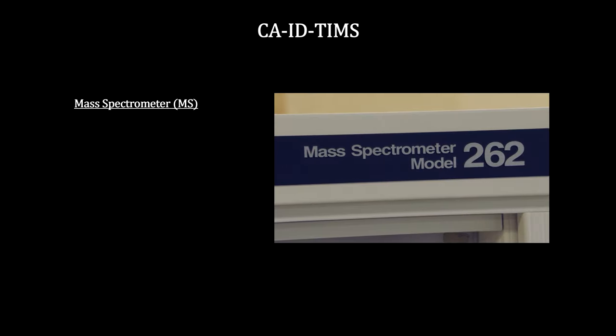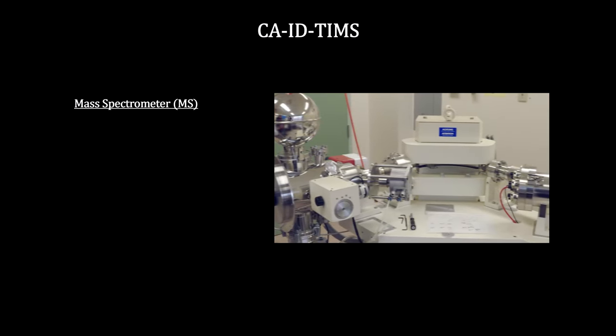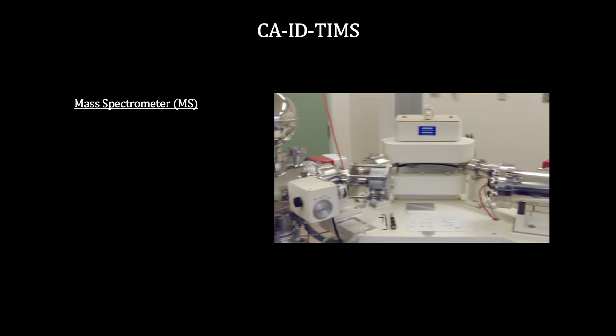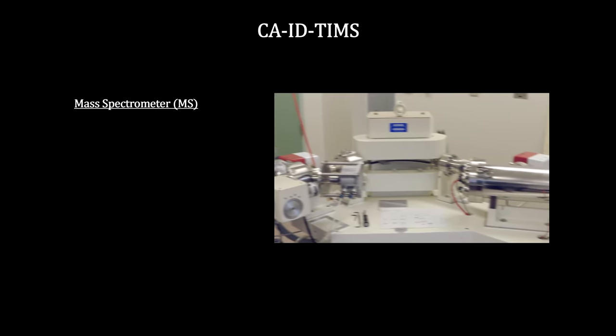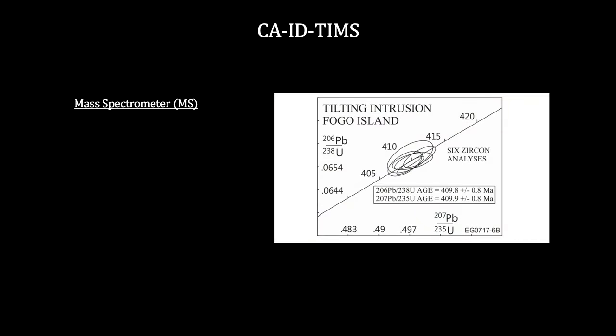The now charged ions flow into the mass spectrometer. Over hours, the mass spectrometer reports the counts and ratios for each stream — this is the mass spectrometry step. These ratios feed the equations that tell us the age of the rock they came from. This rock was 410 million years old.